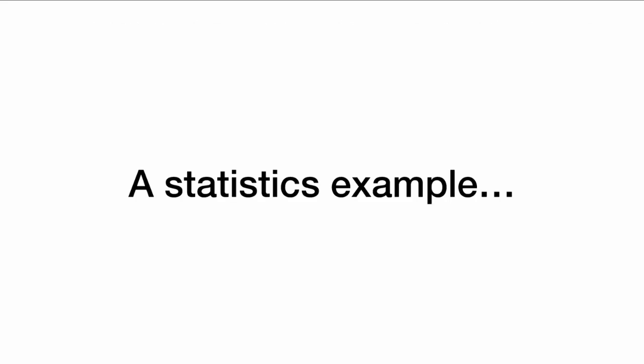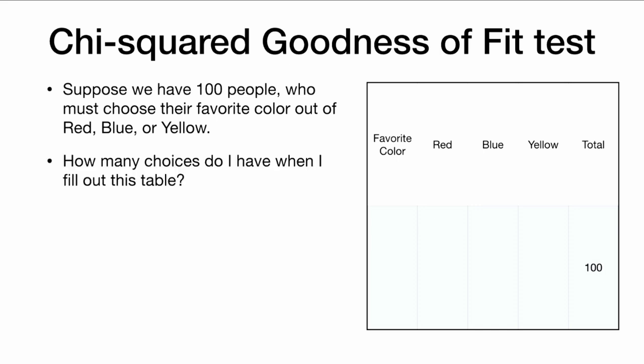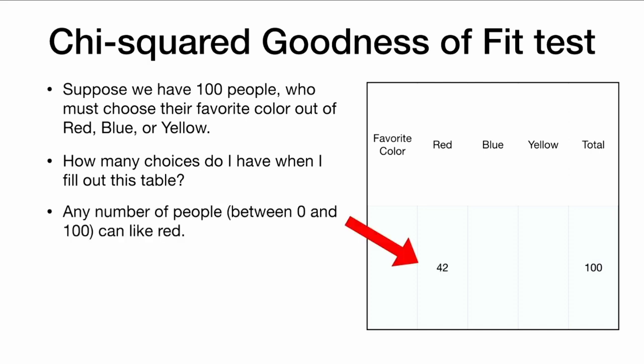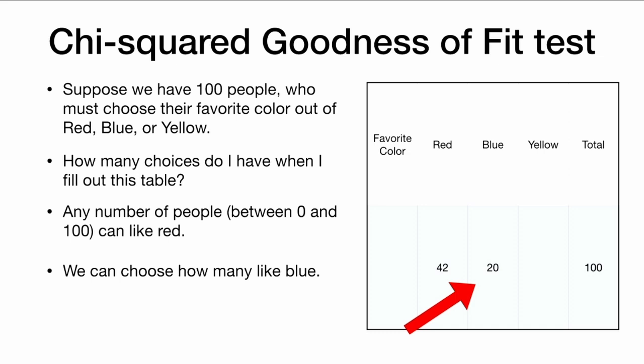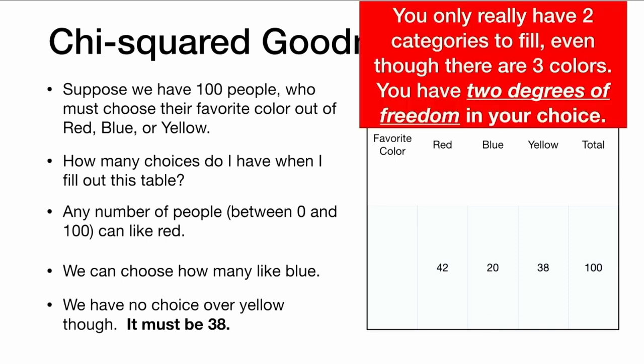Let's look at a statistics example of why we care about degrees of freedom. One common test for categorical data is a chi-squared goodness-of-fit test. Suppose we have 100 people who must choose their favorite color out of red, blue, or yellow. Any number of people between 0 and 100 can like red — say 42 people like red — and we can also choose how many like blue — say 20. We've made two choices. However, we have no choice over how many like yellow. It must be 38 because these numbers must add up to 100. So you really only have two categories to fill even though there are three colors. You have two degrees of freedom.